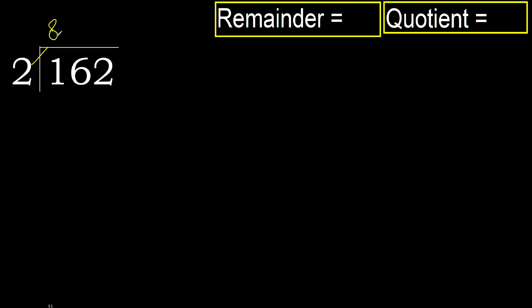Multiplied by 8: 2 times 8 is 16. 16 is not greater, so subtract — 16 minus 16 is 0. Next, bring down and eliminate the 0 on this side. Bring down 2.